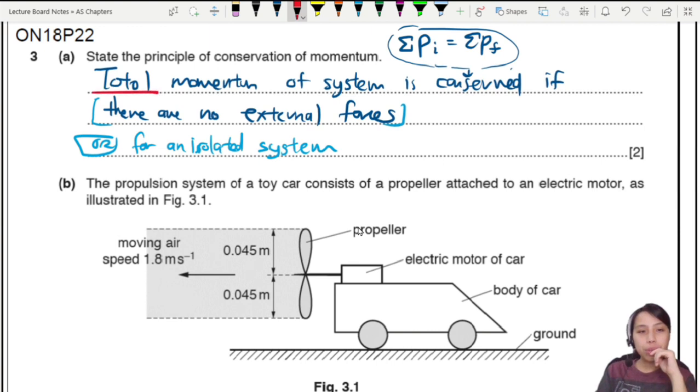So one mark here comes from total momentum. The important sign is that all the components add up together, all the objects, total momentum. And the second one is if there's no external forces, the condition, that's the A1 mark. A1 mark generally must follow the M in order to get it.